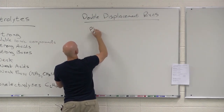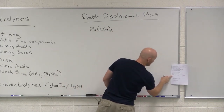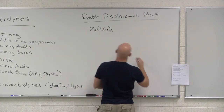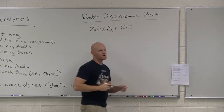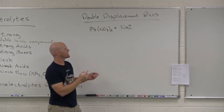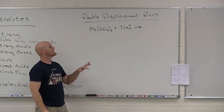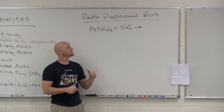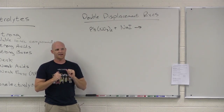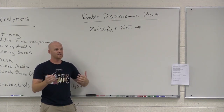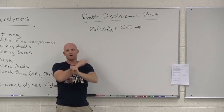On your handout, I've got lead nitrate mixed with sodium iodide. We have to predict the products and balance. In a double displacement or double replacement reaction, cations and anions trade partners. A cation is a positive ion and an anion is a negative ion — they're going to trade partners.